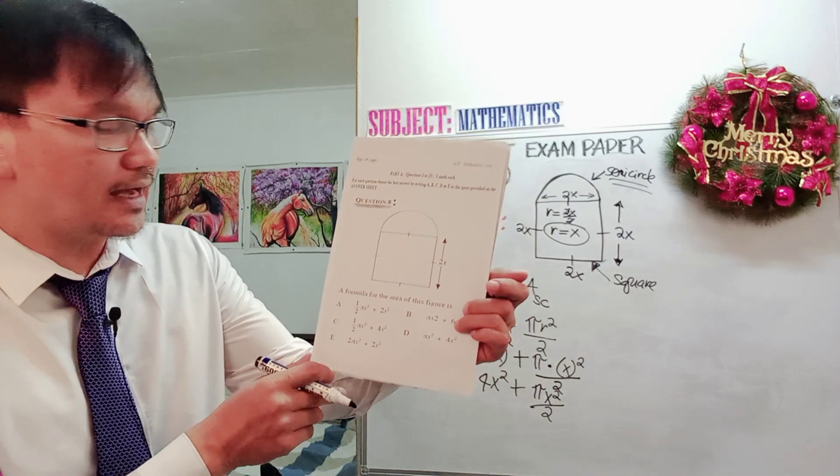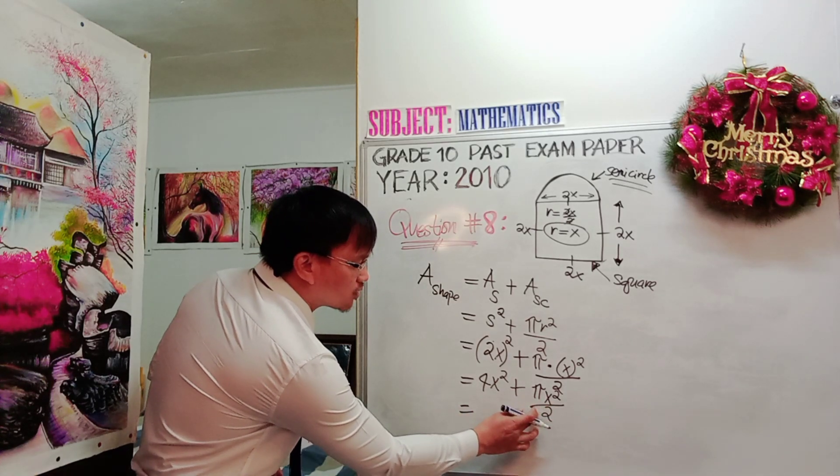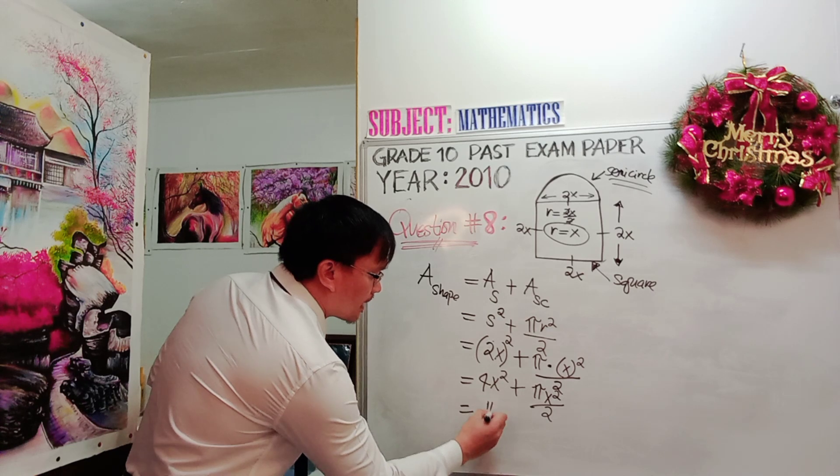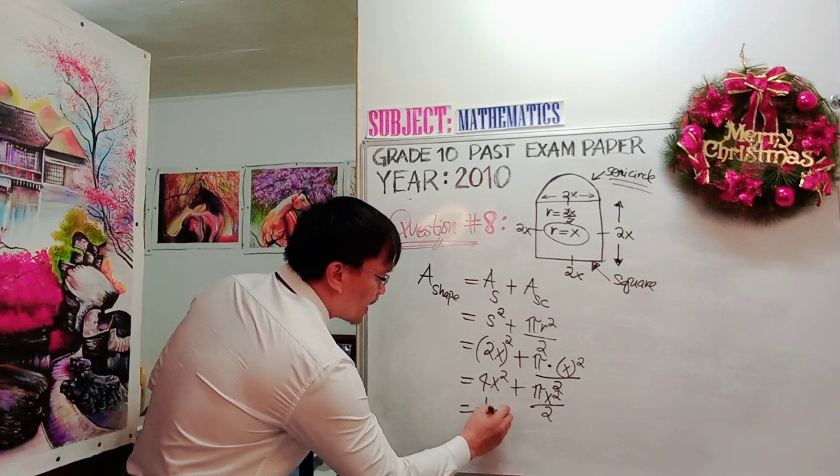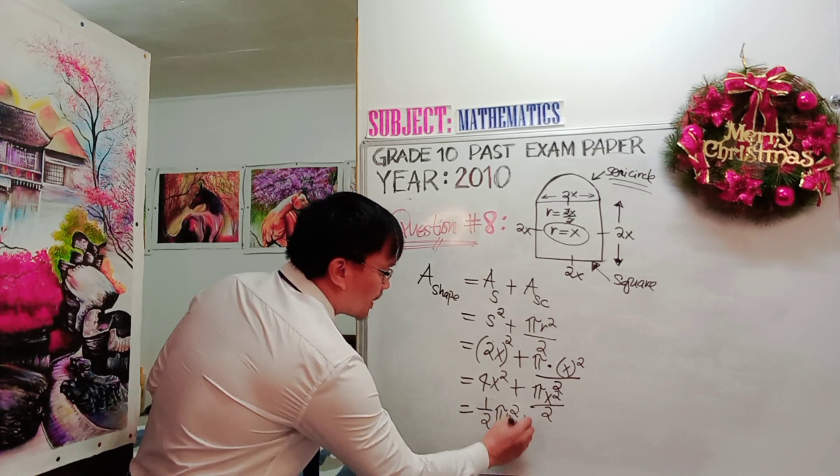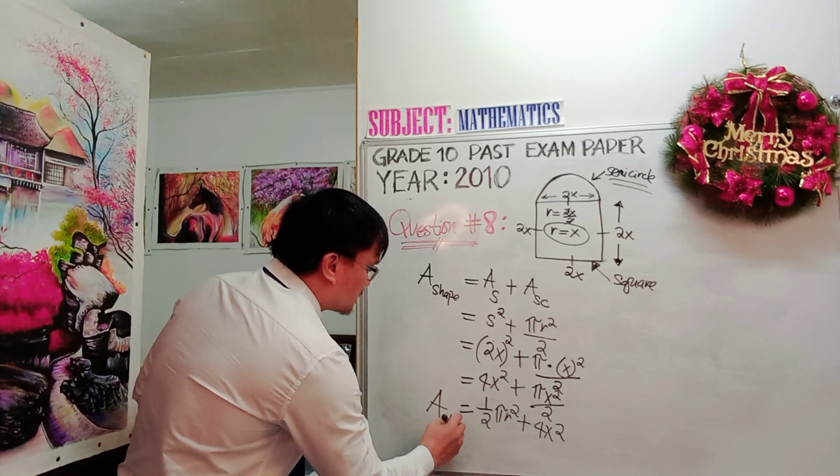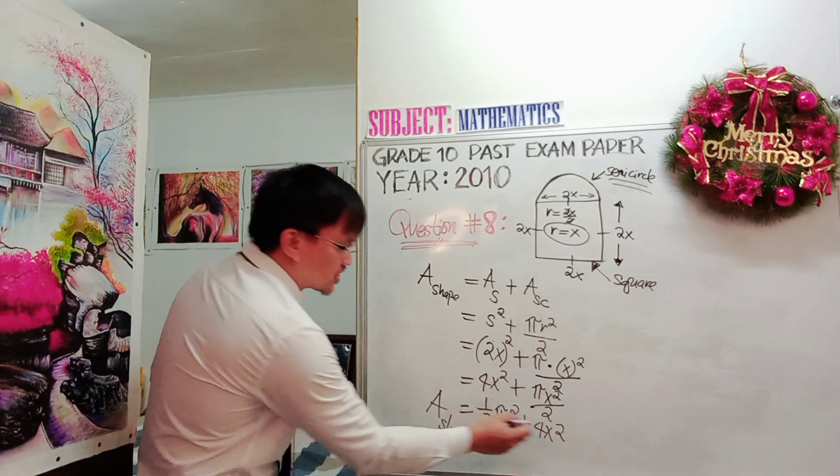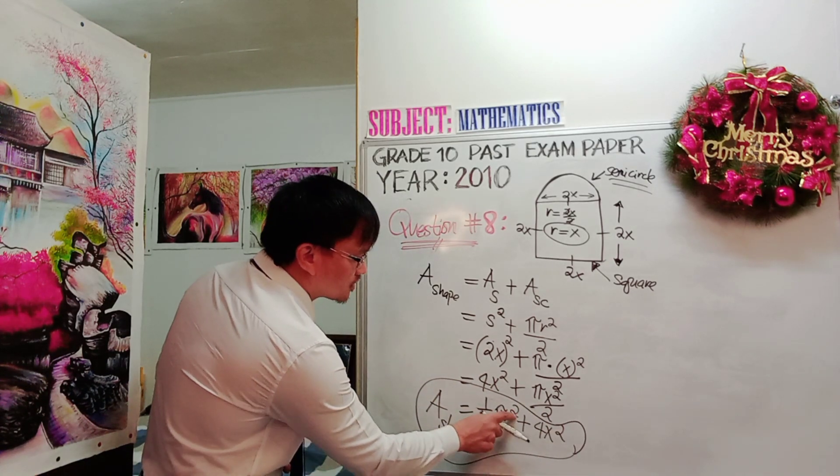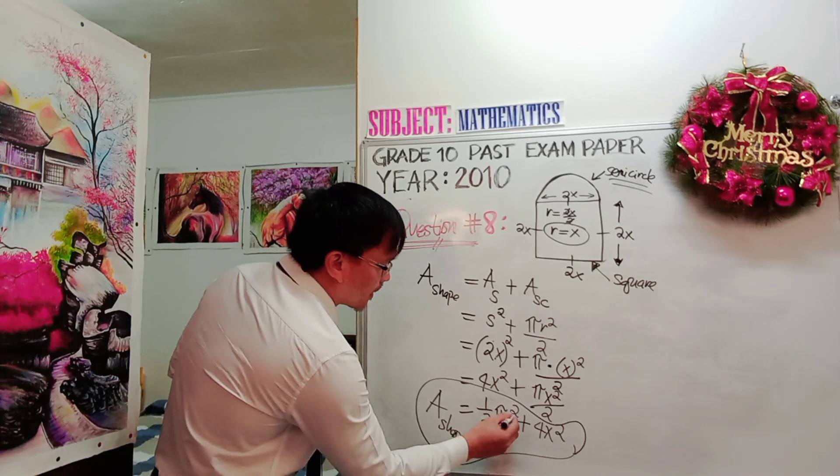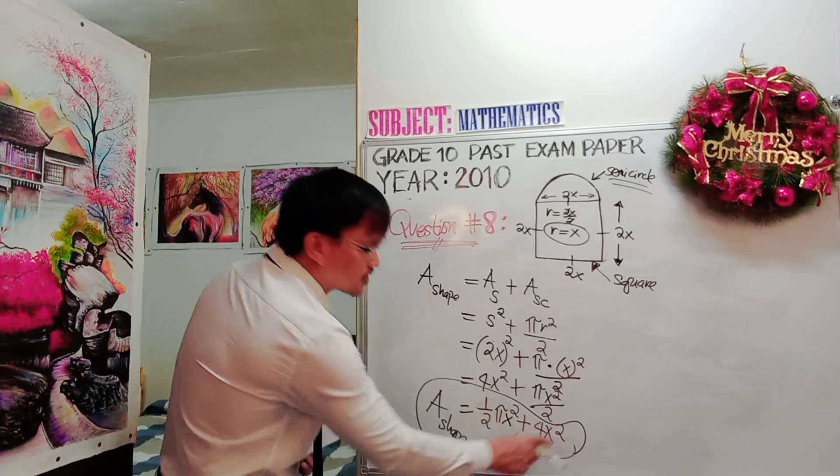From the option here, it looks like the value must be written first as semicircle. You can rearrange this and the value will now become one half pi x square plus 4x square. This is the formula to find the area of the composite shape: area equals one half pi x square plus 4x square.